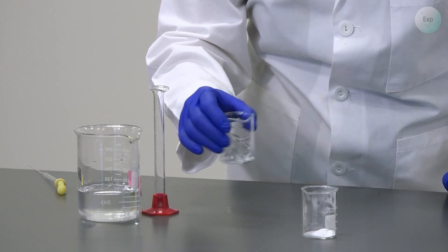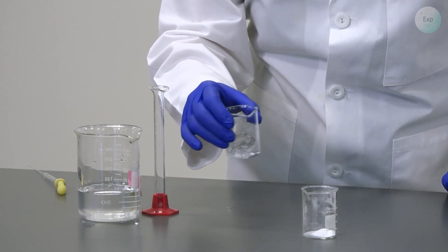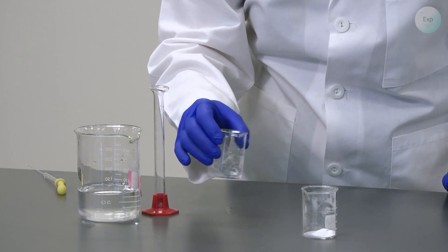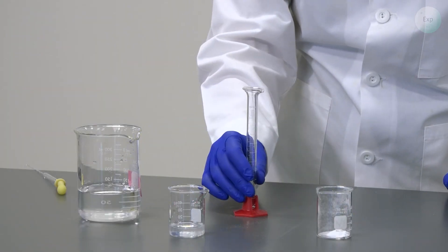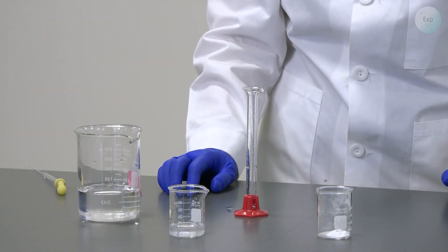Through thorough swirling, all the calcium chloride should dissolve in this amount of water. Next, I am going to measure out another 10 milliliters of deionized water.